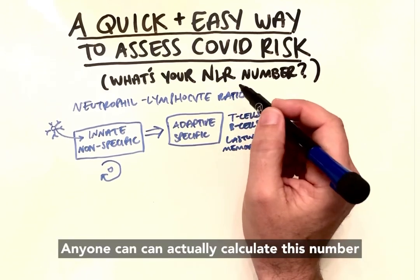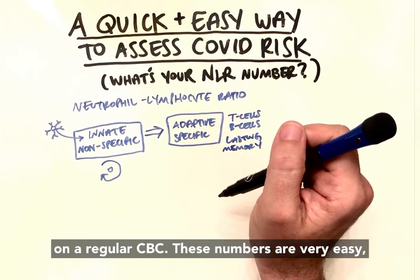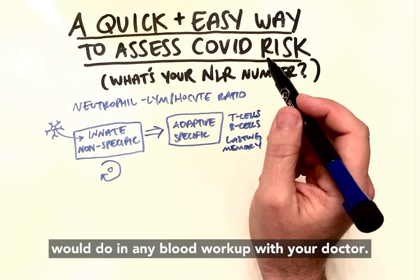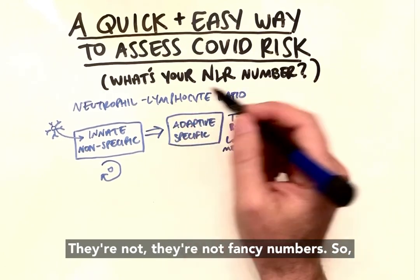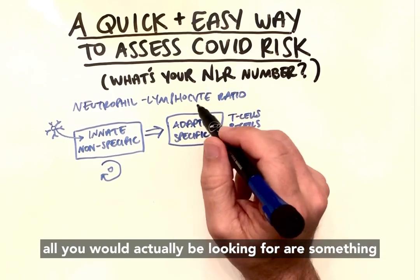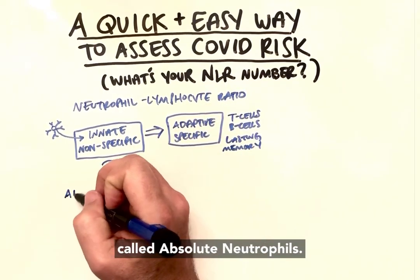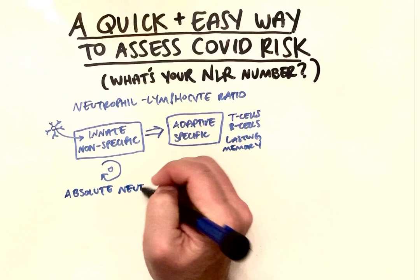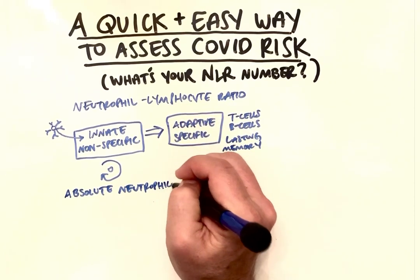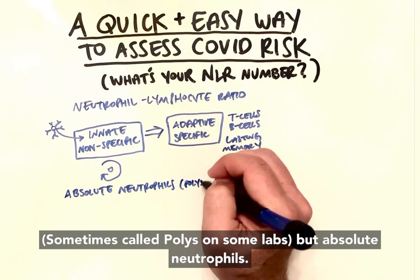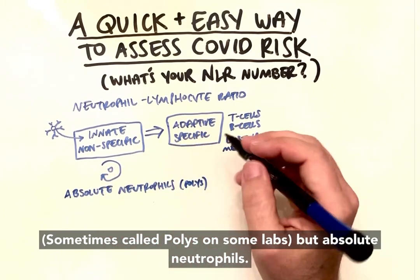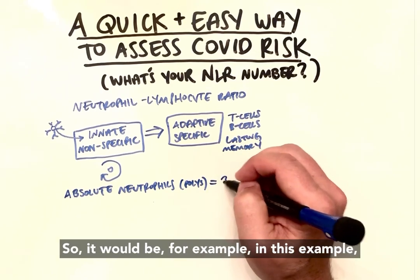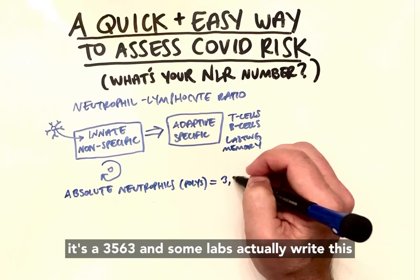Anyone can calculate this number from a regular CBC — these numbers are easily accessible in any blood workup with your doctor. You look for absolute neutrophils, sometimes called polys on some labs. This number is usually expressed in the thousands, for example 3,563.